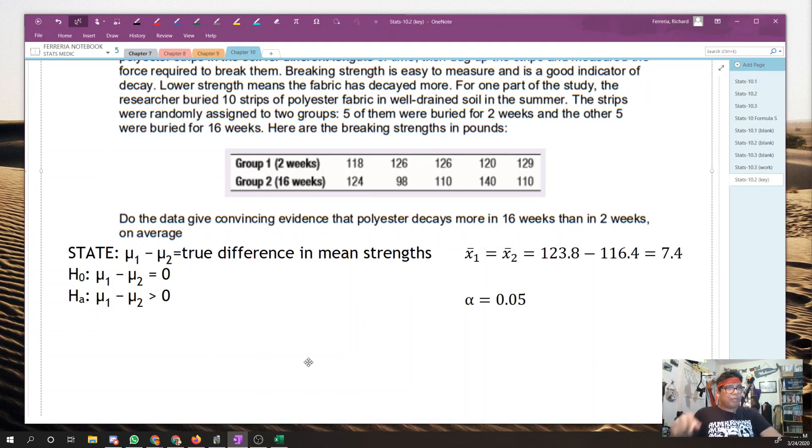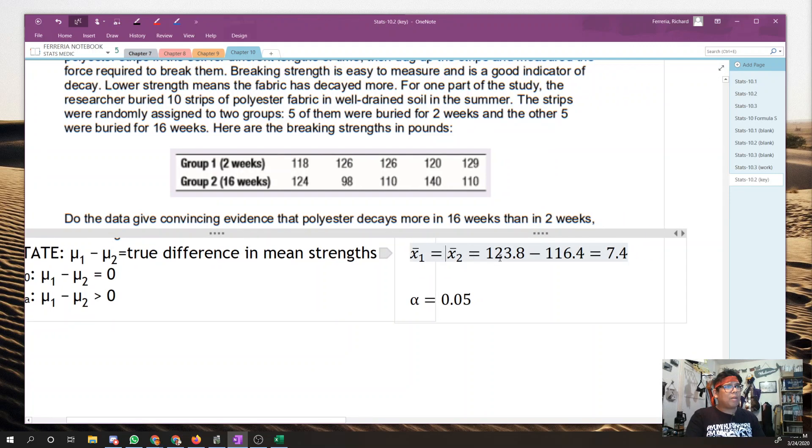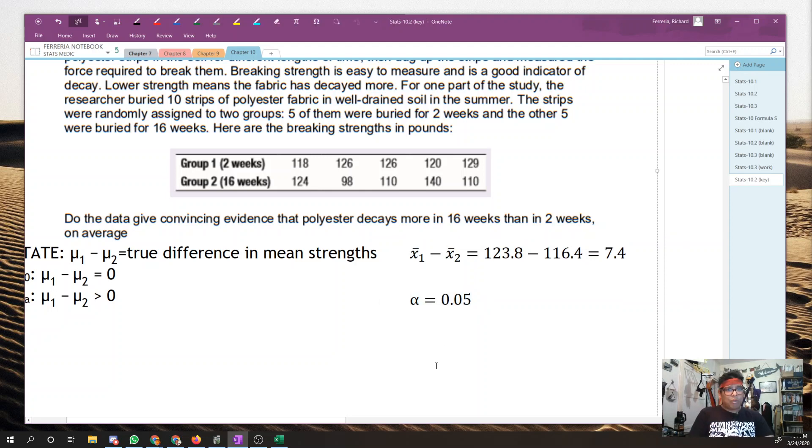Hopefully this sets you up for success. You've got state mu1 and mu2 is a true difference in mean strengths. Our hypothesis, mu1 minus mu2 equals 0. And alternatively, mu1 minus mu2 is greater than 0. So if mu1 minus mu2 is greater than 0, that means mu1 is greater than mu2, which means that the strength after two weeks is greater than the strength after 16 weeks, which means that 16 weeks is decayed more than two weeks. We've calculated x bar 1 minus x bar 2. It's 7.4, and I should probably make that a minus sign. And our alpha level is 0.05 because nothing was stated. Folks, go ahead and do the plan, do, and conclude. And I'll come back with a review. Pause it right here.